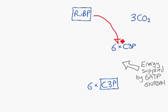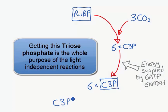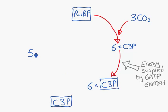So we end up with the first half of the Calvin cycle here. One triose phosphate is broken off and sent away.